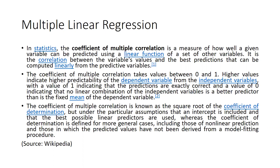It is the correlation between the variable's values and the best prediction that can be computed linearly from the predictor variables. How much these independent variables could be able to explain the dependent variable — up to 70%, up to 80%, or up to 50% — that will define multiple regression. The coefficient of multiple correlation takes a value between 0 and 1.